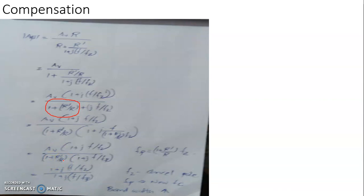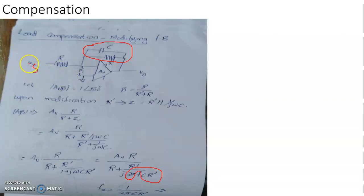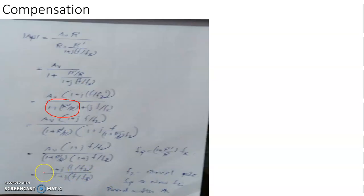Suppose we are operating the op-amp in non-inverting configuration. Then this one cancels with this one, and Aβ becomes 1 plus j into F by Fz divided by 1 plus j into F by Fp, where Fp is taken as this frequency: 1 plus R prime by R into Fz. That is, 1 plus R prime by R into Fz is taken as Fp.